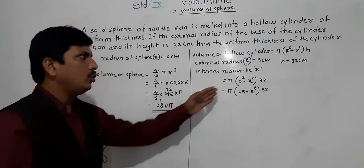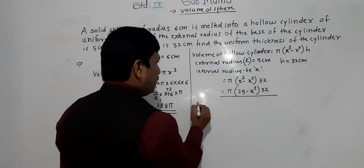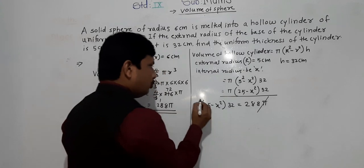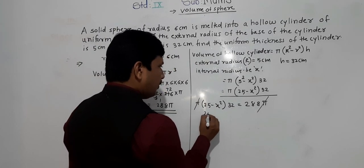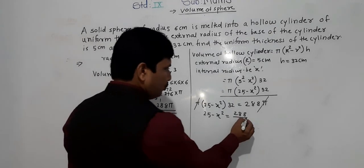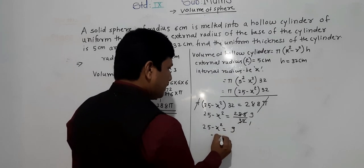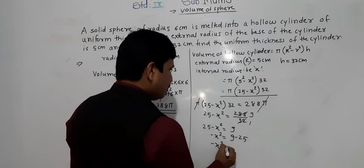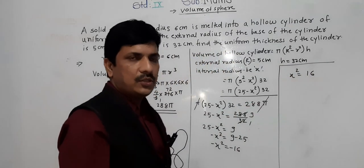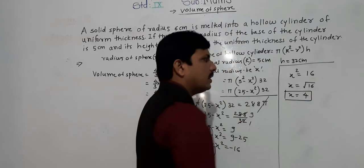The volume of the sphere and the volume of the hollow cylinder will be the same, so we can equate them: pi into (25 minus x square) into 32 equals 288 pi. Pi cancels. So 25 minus x square equals 288 divided by 32, which equals 9. Therefore x square equals 25 minus 9 equals 16, so x equals 4. We take the positive value since this is a radius.